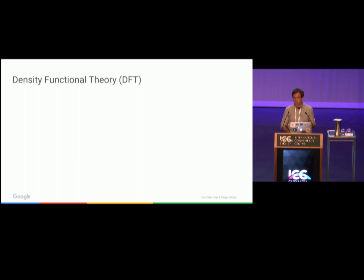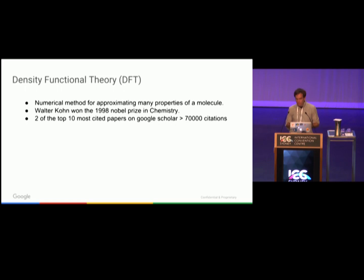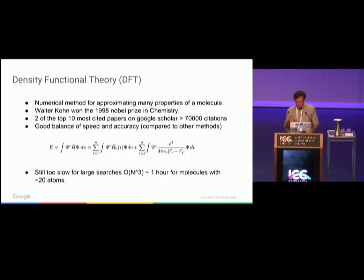Back to chemistry. The application that we're interested in involves density functional theory (DFT). This is a numerical method for approximating many quantum properties of a molecule. The inventor, at least one of the inventors, won the Nobel Prize in chemistry for it. It's responsible for two of the top ten most cited papers of all time. It's widely used because it's a good balance of speed and accuracy. It does a bunch of math to approximate the wave equation, but an important thing is that it's still too slow for large searches. If you want to run DFT on a small organic molecule, it will take around an hour.